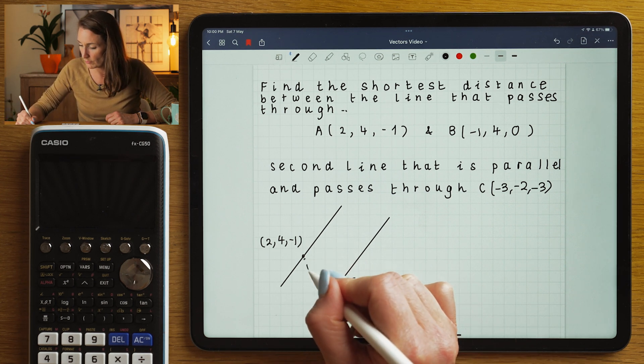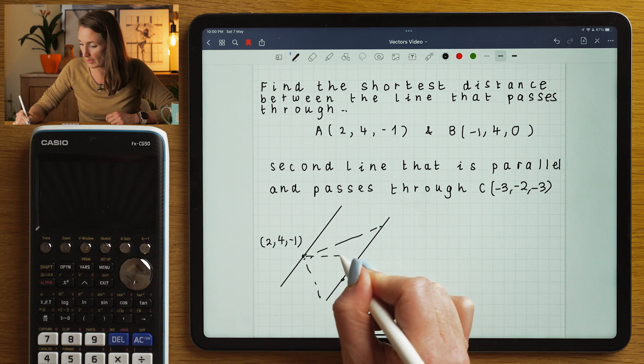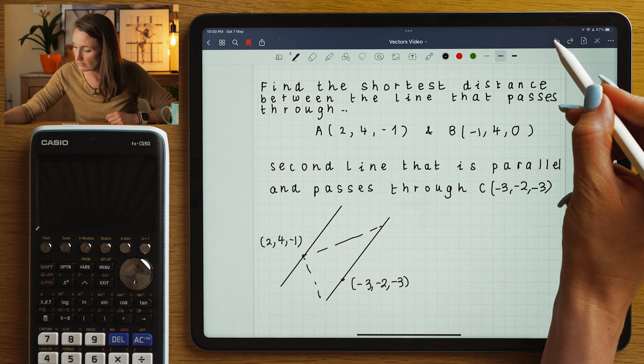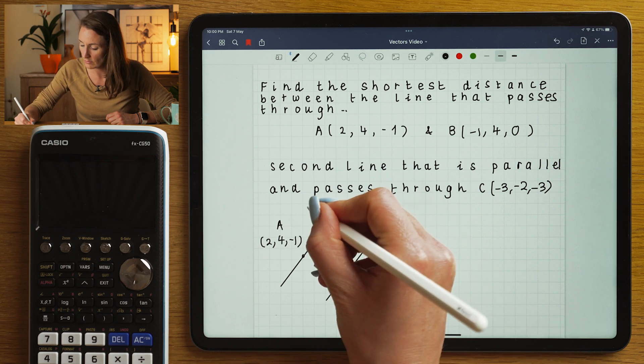We don't know, for example, it might look like this. It might look like that. It could look like this. We don't know where they are in relation to each other. But the first thing I'm going to do is find the direction vector that joins A to B.